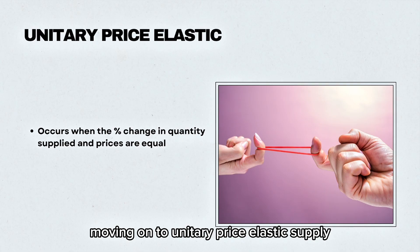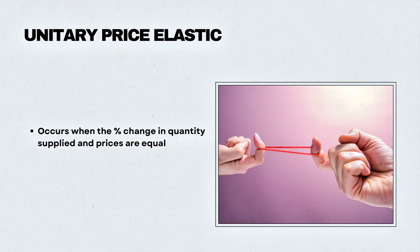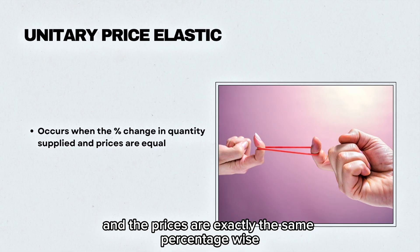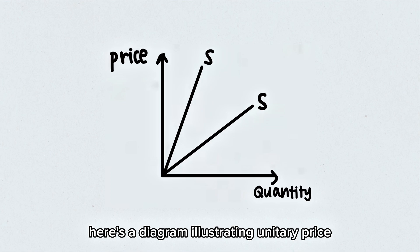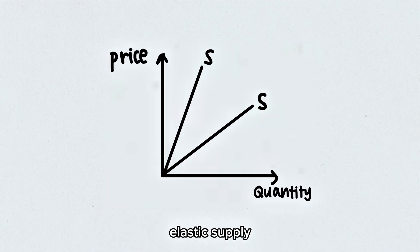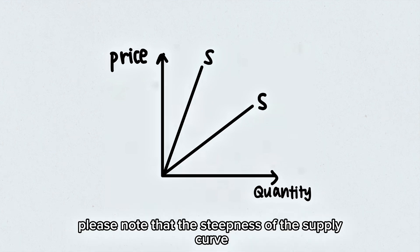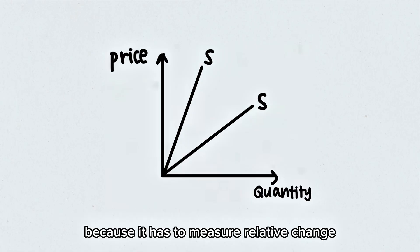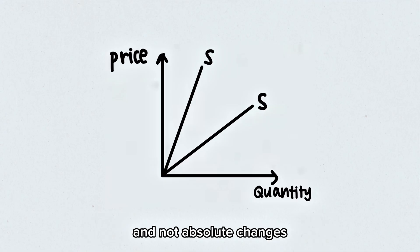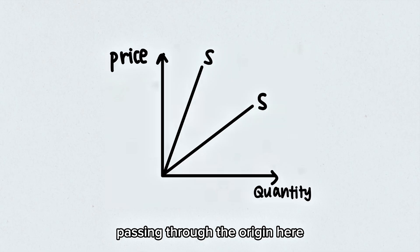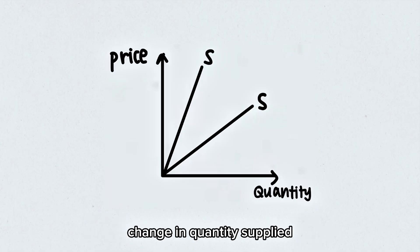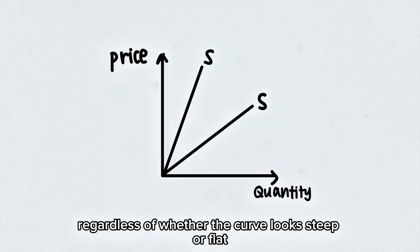Moving on to unitary price elastic supply. This occurs when the percentage change in quantity supplied and the price are exactly the same percentage-wise. Please note that the steepness of the supply curve does not matter for unitary price elasticity, because it measures relative change and not absolute changes. For any supply curve passing through the origin, every percentage change in price will always lead to the same percentage change in quantity supplied, regardless of whether the curve looks steep or flat.